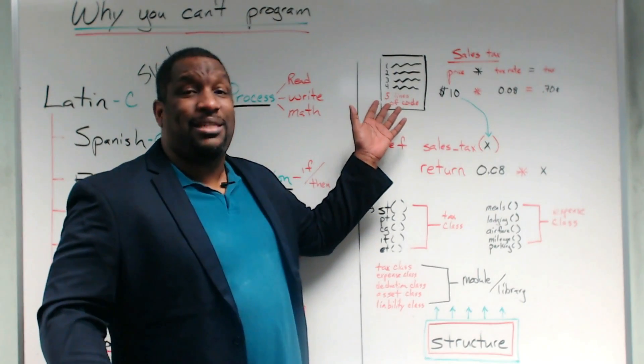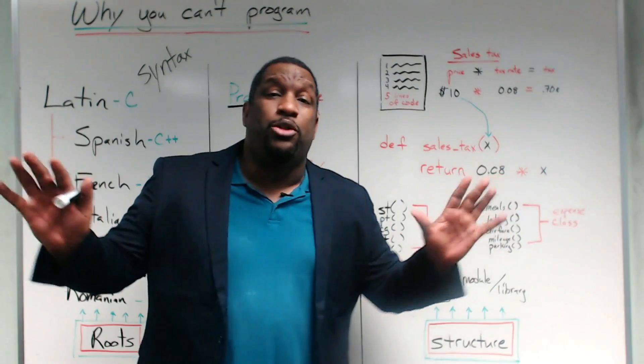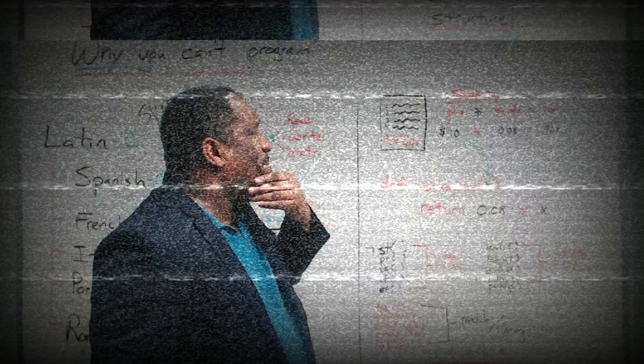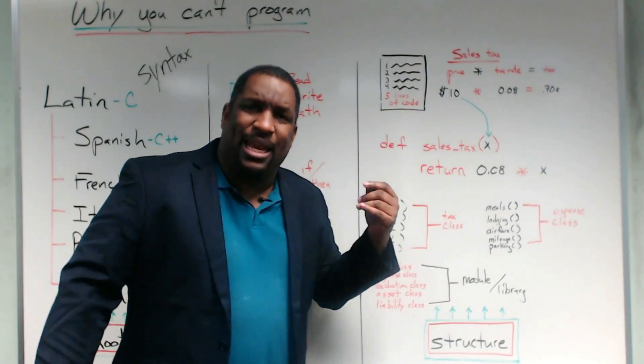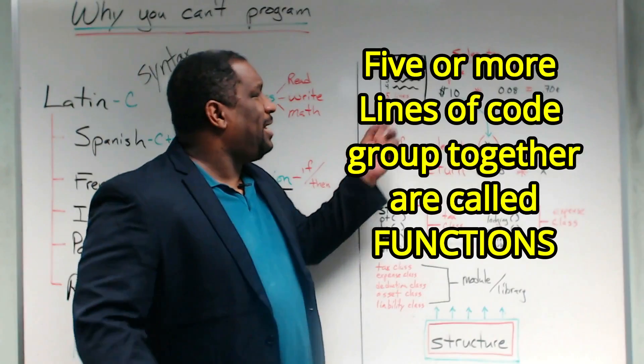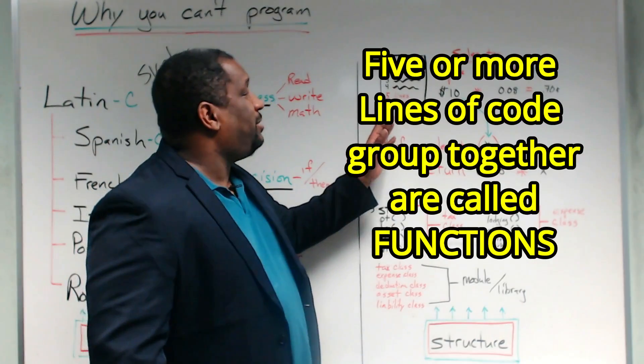And basically, I kind of came up with a rule. Never more than five to 10. If I start coming up on five to 10 lines of code, whatever I'm doing is too hard. And if I'm coming up on like five or 10 lines, I need to put that in a function. So let's give an example.